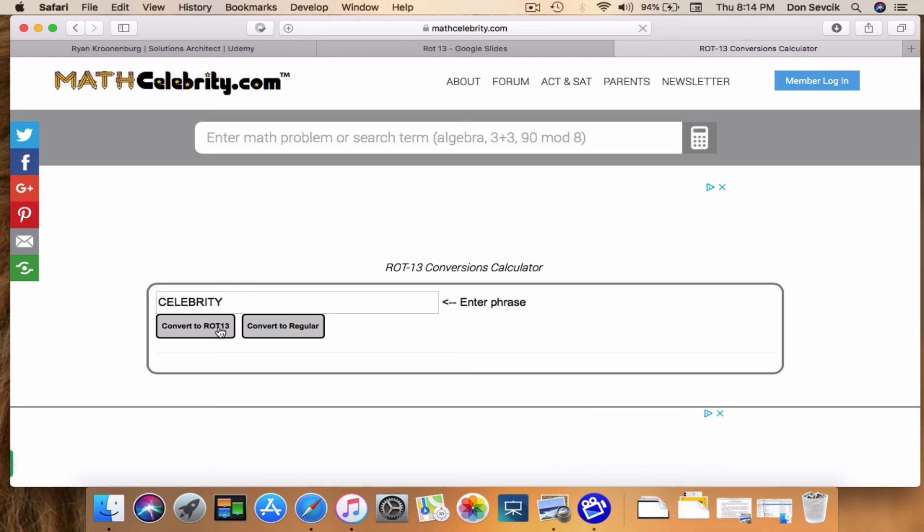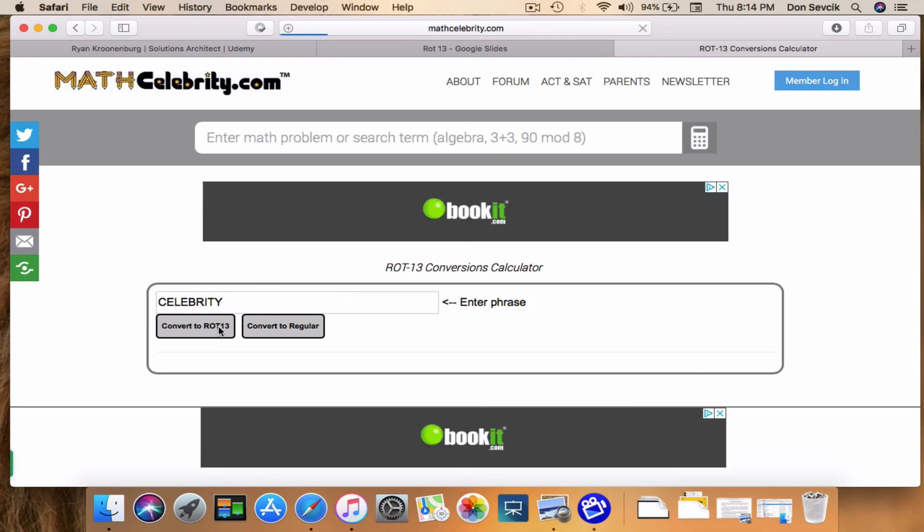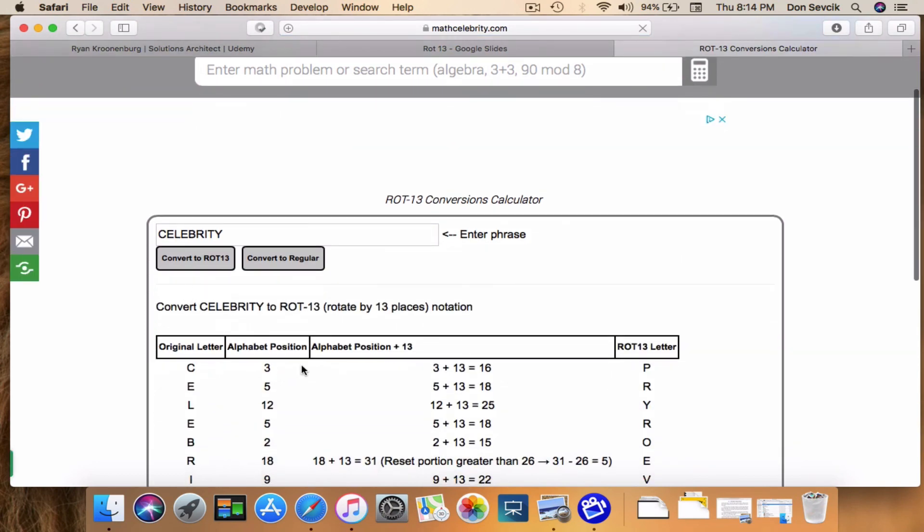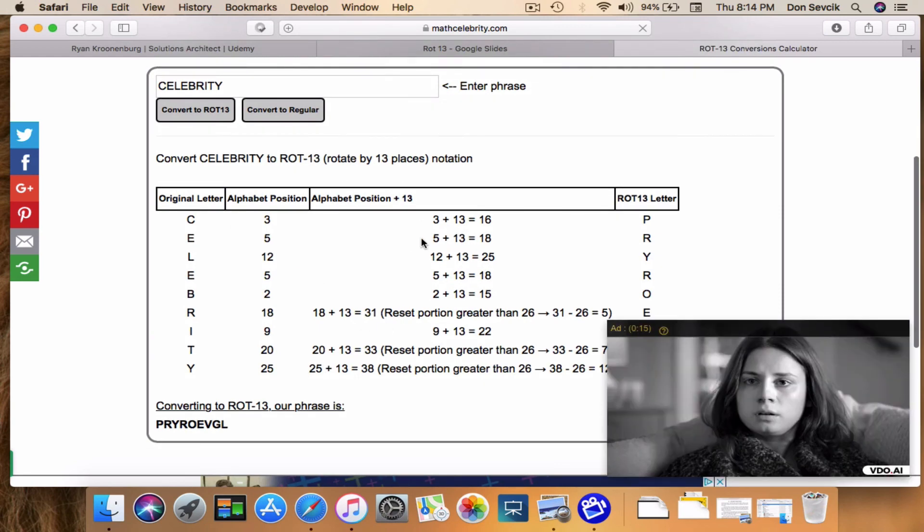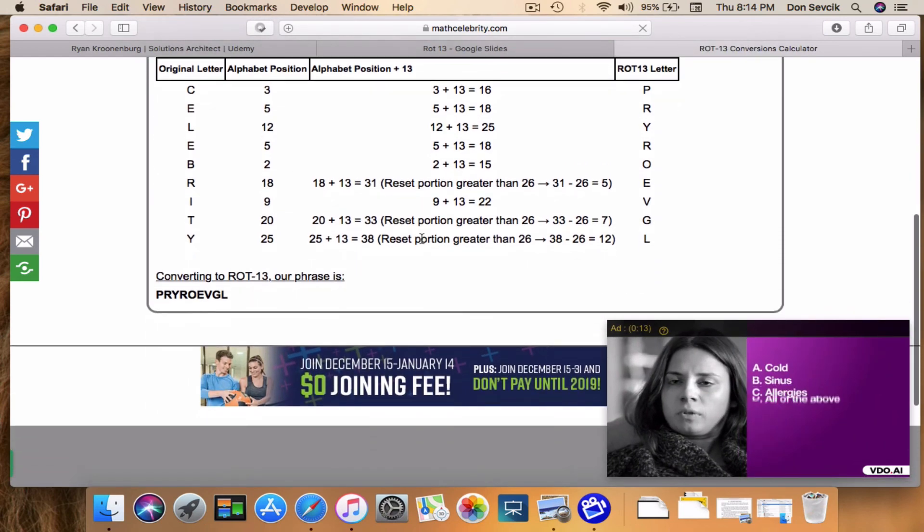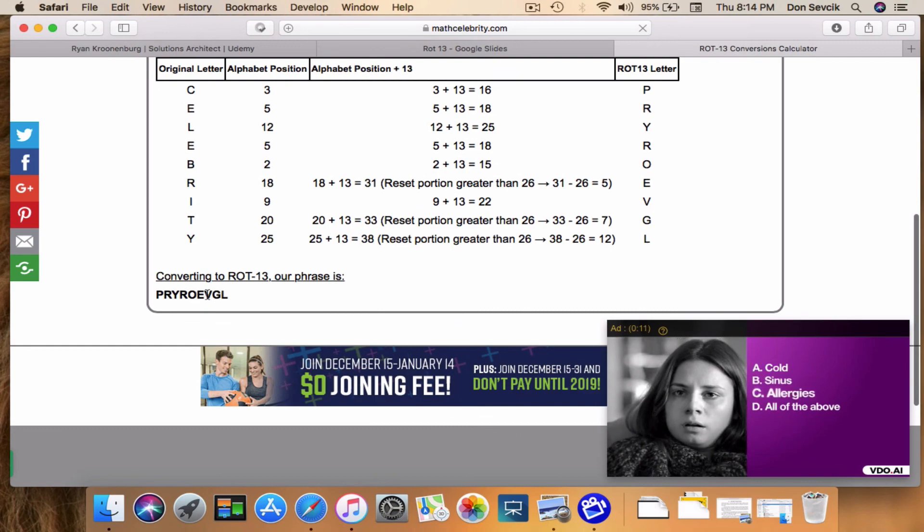We're going to convert the word celebrity to ROT13. So if you want to encrypt, you click the first button and it walks through all the steps we just walked through in our video, and it gives you a final decrypted word.